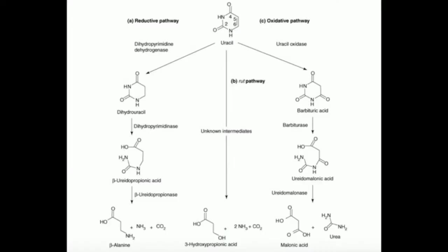Take a look at uracil catabolism — I'll show you this in the next video — but uracil catabolism follows the reductive pathway, and you end up with this molecule called beta-alanine. Beta-alanine is actually a really important molecule in humans, particularly in skeletal muscle, and we have an entire video on beta-alanine. Beta-alanine plays an important role in skeletal muscle buffering during vigorous exercise.